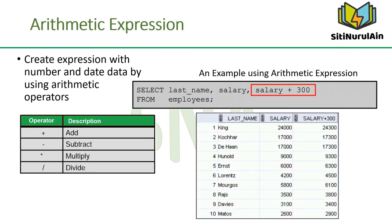You may need to modify the way in which data is displayed, or you may want to perform calculations or look at what-if scenarios — all of these are possible using arithmetic expressions. An arithmetic expression can contain column names, constant numeric values, and arithmetic operators. The slide lists the arithmetic operators available in SQL. You can use arithmetic operators in any clause of a SQL statement except the FROM clause. The example uses the addition operator to calculate a salary increase of $300 for all employees.